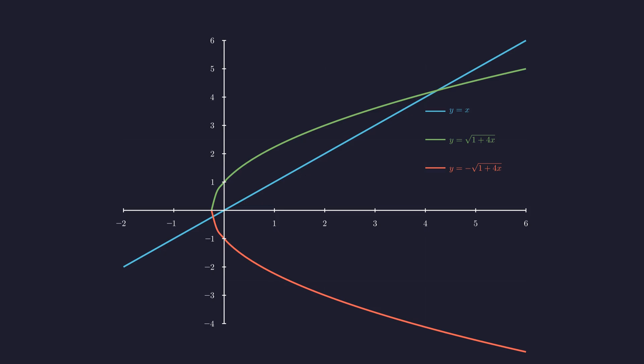But notice, I'm also plotting the negative version in red, which is what we accidentally included when we squared. And there you have it.